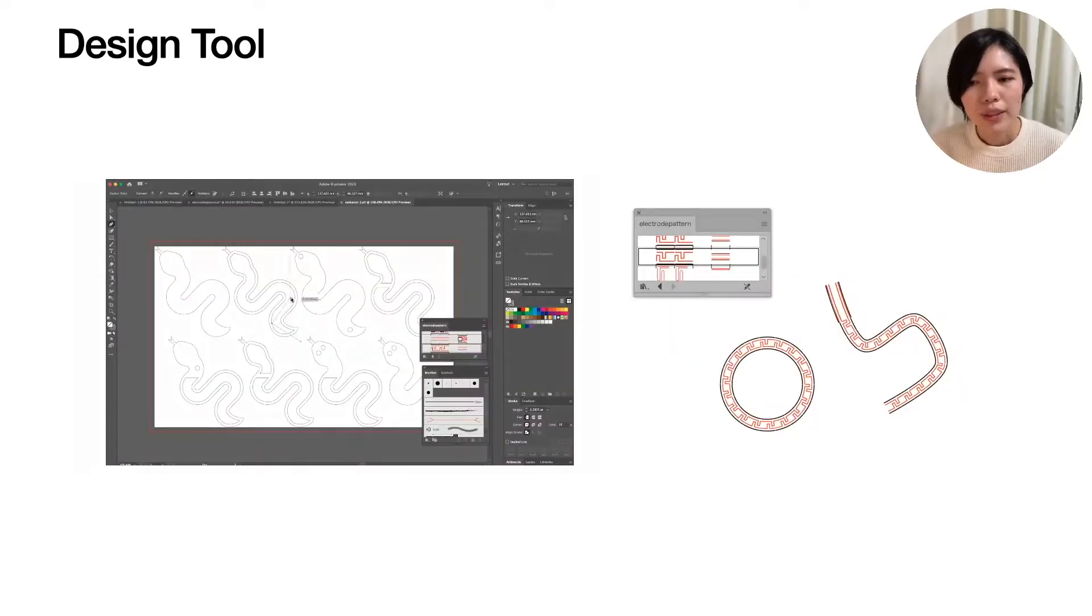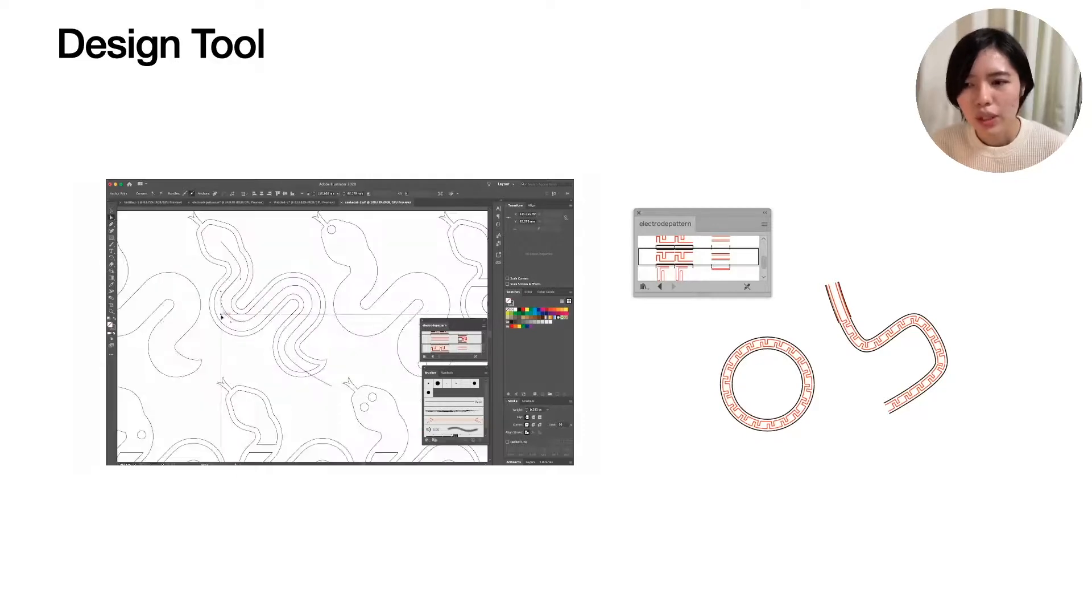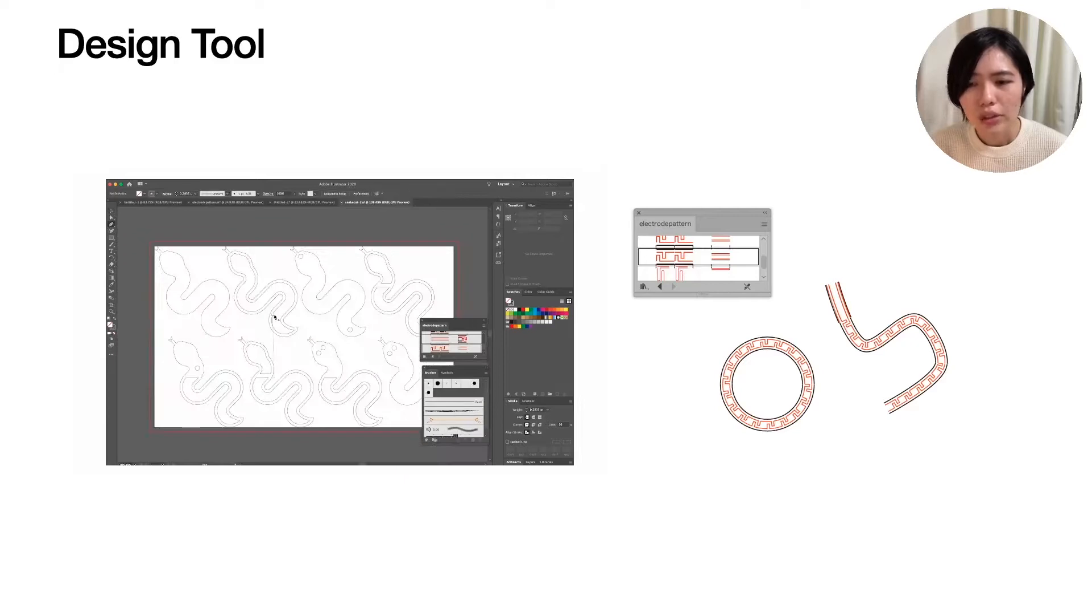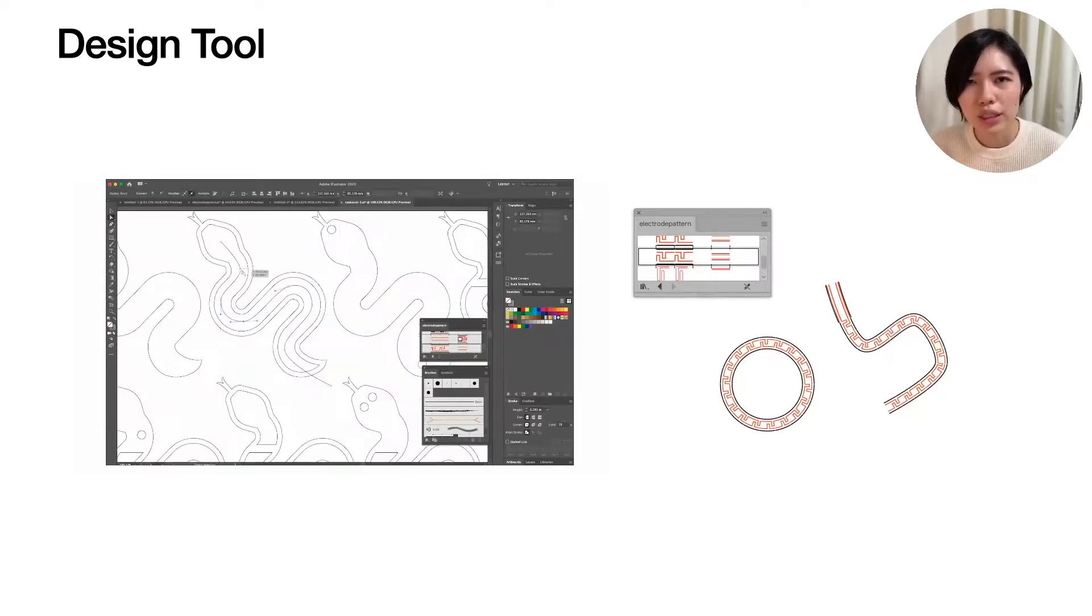To simplify the electrode layout, we designed a brush pattern using Adobe Illustrator. According to the shape of the drawn line, the electrode pattern will be generated automatically.